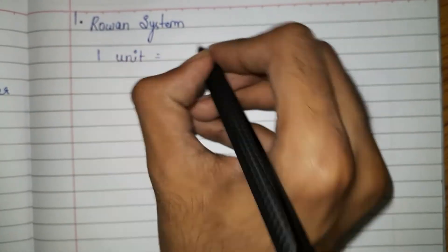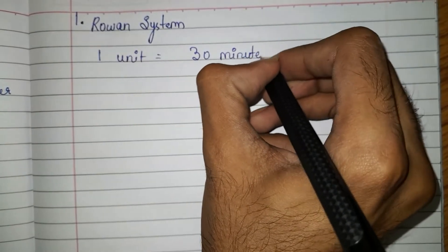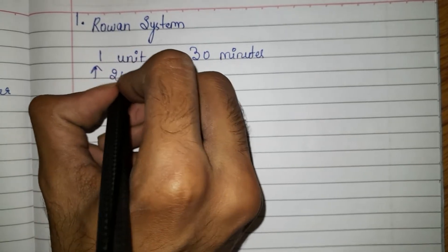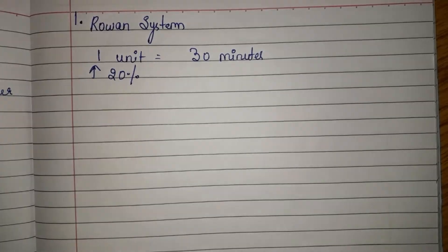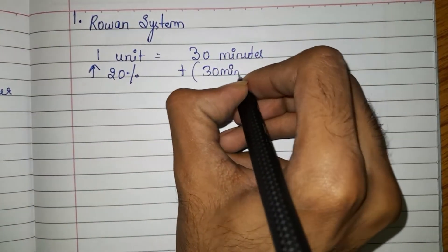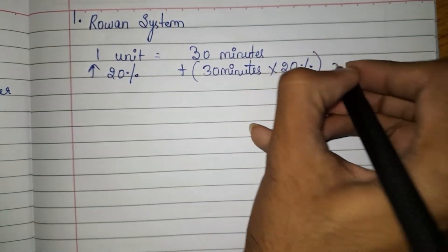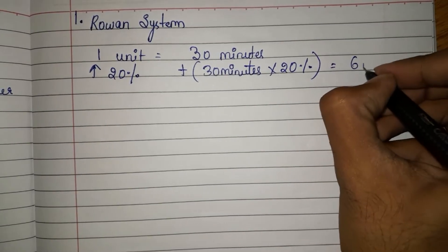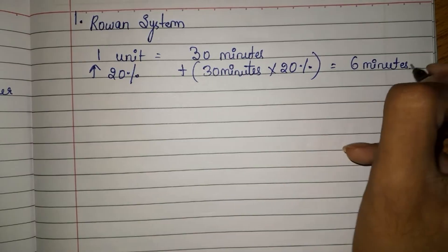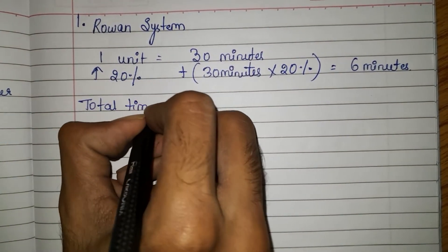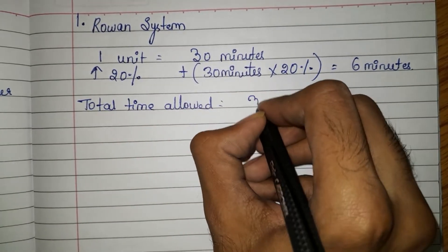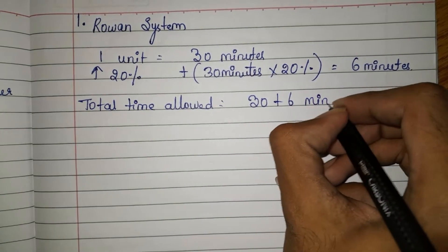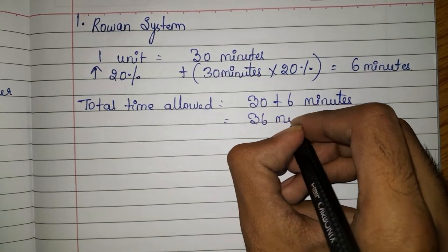Now pay attention here. To produce one unit, the worker will take 30 minutes. Under the incentive plan, there is an increase of 20% in time. So add 30 minutes into 20% — 20% of 30 minutes is 6 minutes. They are giving an additional 6 minutes, which increases the time. So total time allowed per unit is 30 minutes plus 6 minutes, which gives 36 minutes.